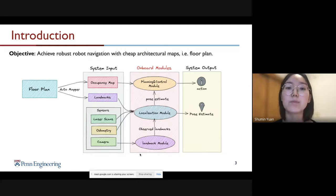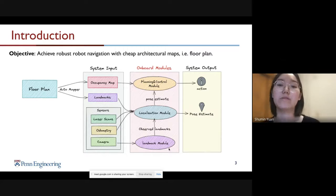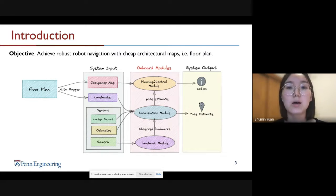The computing system consists of mainly three modules. The first module is a planning and control module, which was mainly the work from G-House. The localization module is the focus of my independent study project. And the other one is the landmark module, which was also developed by me. The whole system output should be an action that comes from the planning and control module and the pose estimate from the localization.